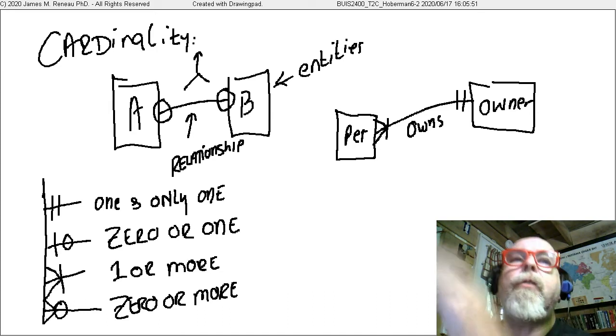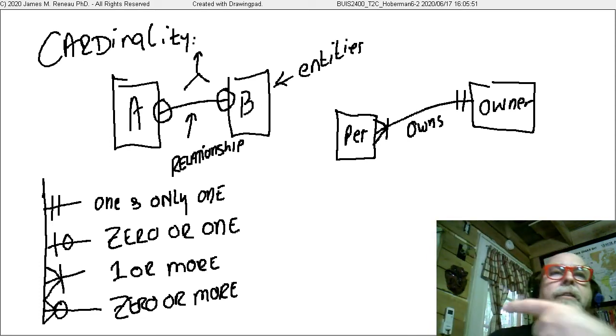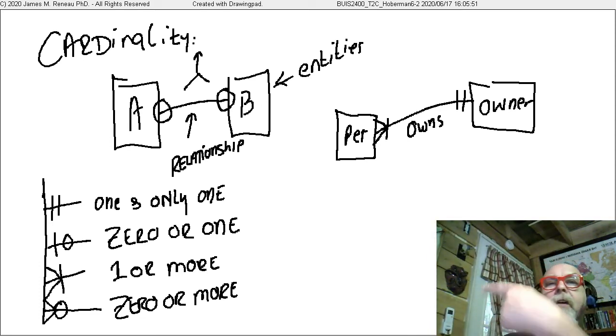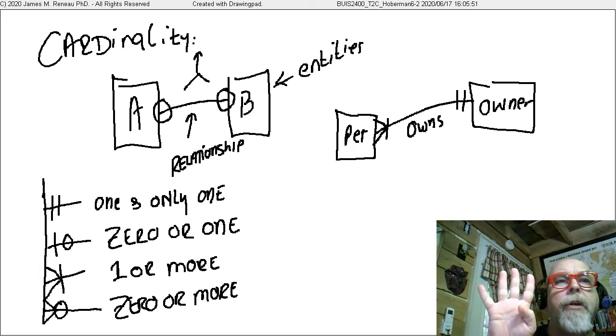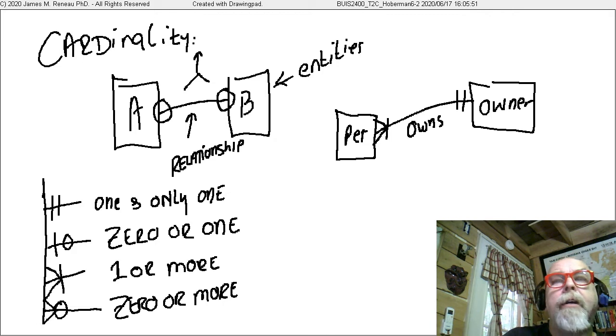And you can see the crow's feet over here that there are four different symbols that we use. The two bars represents one and only one. The bar with a zero represents zero or one. The greater than with a bar represents one or more. And the greater than with a zero represents zero or more.